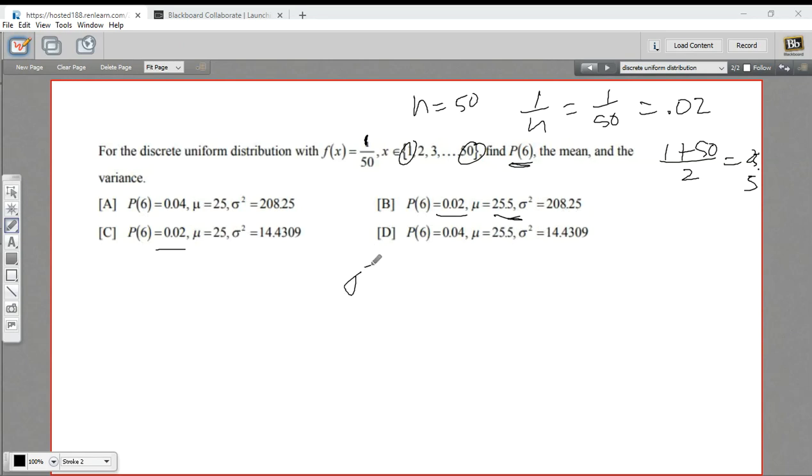So the variance, σ², is going to be B minus A plus 1 squared minus 1 divided by 12. So B minus A, 50 minus 1 is 49, plus 1 is 50. 50 squared, that's 2,500. We'll subtract 1 from that and then divide by 12, and I've got 208.25. And you can see that's what we've got here as well. So that is the correct answer for this discrete uniform distribution.